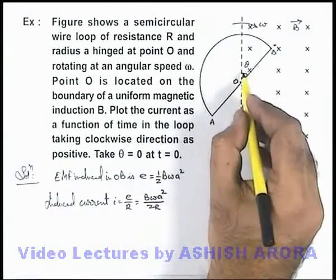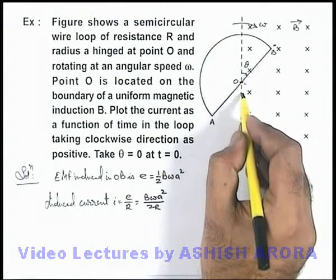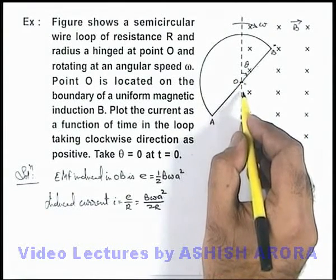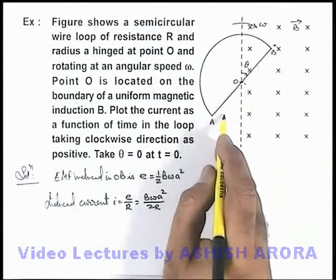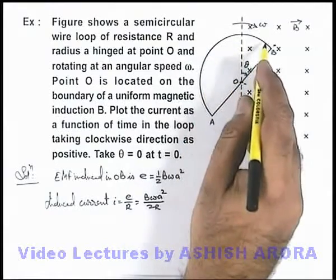When theta becomes pi, after duration t equals pi by omega (that is half rotation), OB will come out of the field and OA will enter into the field.